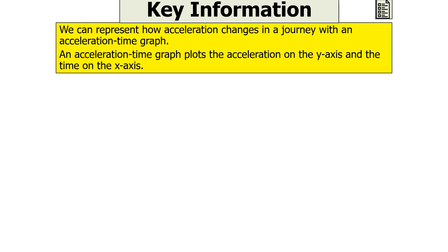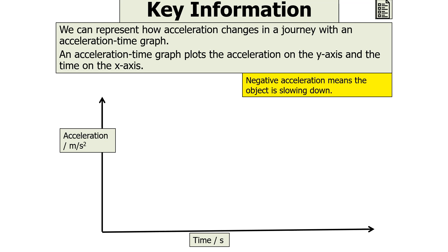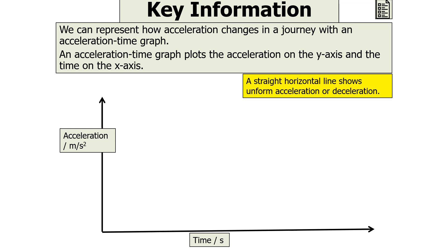We can represent how acceleration changes in a journey with an acceleration time graph. An acceleration time graph plots the acceleration on the y-axis and the time on the x-axis as shown below. A positive acceleration means the object is speeding up. A negative acceleration means the object is slowing down. If the object has an acceleration of zero, then it is moving with a constant velocity. A straight horizontal line will show either uniform acceleration or deceleration.